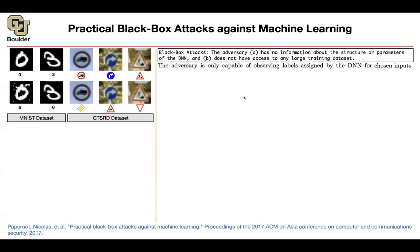What is the adversary capable of? They are capable of testing the neural network. Maybe they can buy a self-driving car from Tesla and drive it, looking at the predictions of its visual system. In self-driving cars, because they want to increase the trust of the customer, they have a panel showing what the car is seeing — for example, a red light. So you can know the corresponding labels. You can show it one image and it will tell you the corresponding label. There are also neural networks on the internet where you can show an image and get the corresponding class.